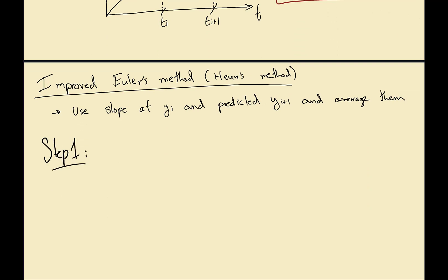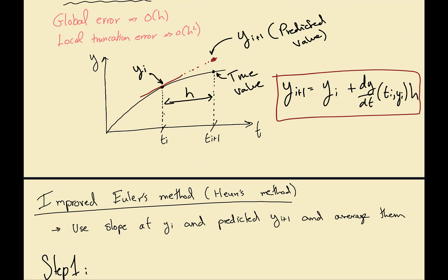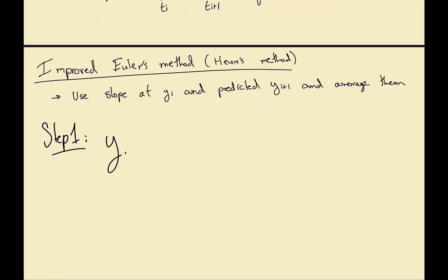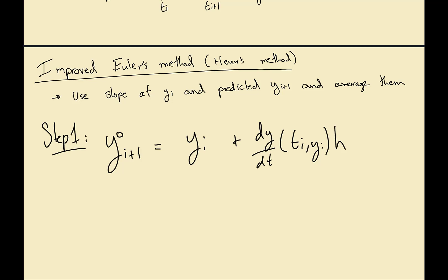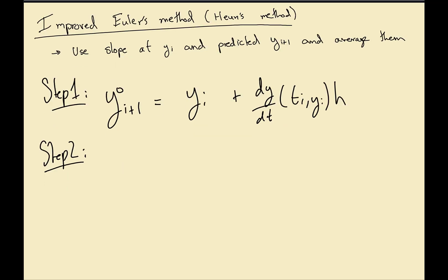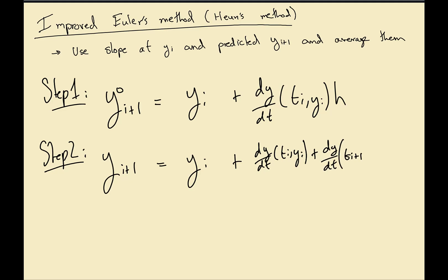The steps for the improved Euler's method are: step one is to predict yi+1 using Euler's method — we call that yi+1⁰, which is yi plus (dy/dt) at the initial point times h. Then the corrected value of yi+1 starts with the initial value plus the average of (dy/dt) at the initial point and (dy/dt) at the forward point (ti+1, yi+1⁰), divided by two, multiplied by h.